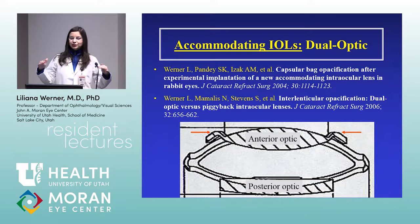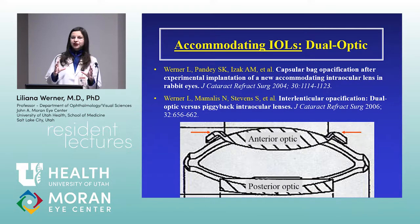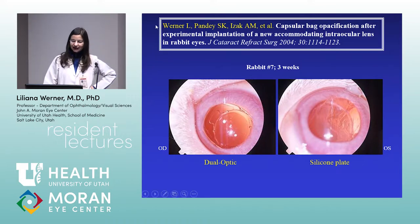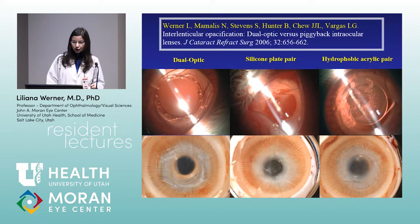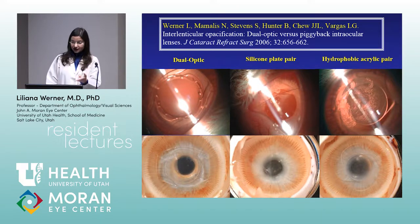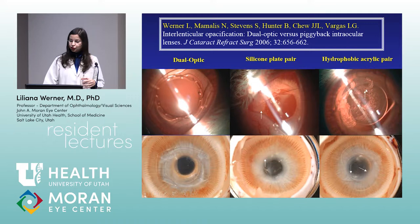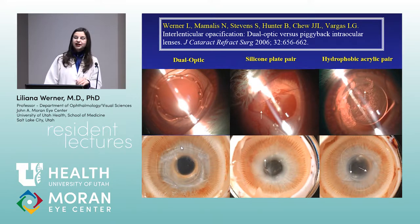This IOL had eyelets on the anterior optic so the anterior capsule had very limited contact with the silicone, and being a dual-optic design it kept the bag open and expanded. In rabbit studies, not only was there no posterior capsular opacification compared to controls, but there was also no anterior capsule opacification — because without contact between IOL and anterior capsule, the anterior capsule does not opacify. Interlenticular opacification was not a problem with silicone lenses, only with hydrophobic acrylic (AcrySof) lenses.